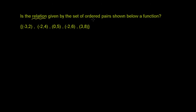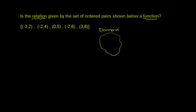Is the relation given by the set of ordered pairs shown below a function? Before we attempt this problem, let's remind ourselves what a relation is and what type of relations can be functions. In a relation, you have a set of numbers that you can view as the input — we call that the domain. And you have a set of numbers that can be viewed as the output — we call that the range.